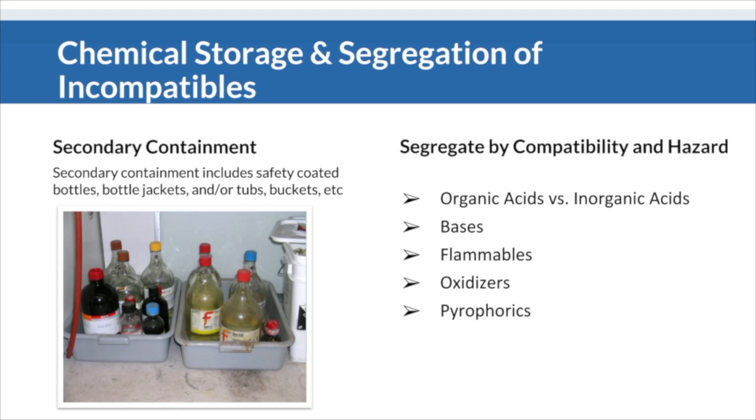Proper chemical storage involves segregating your chemicals by compatibility and hazard, not necessarily alphabetically, because that can be more dangerous if chemicals leak or spill and potentially cause a reaction.